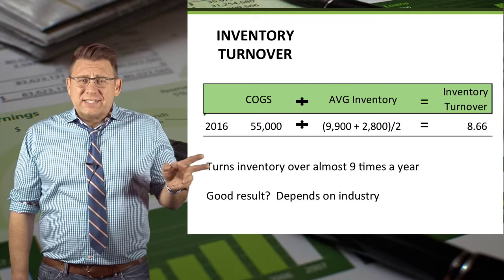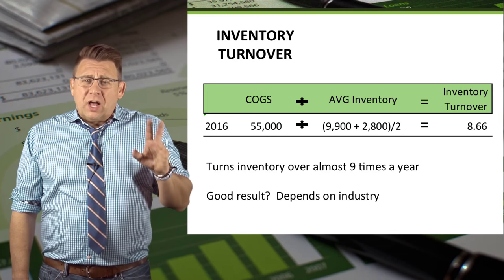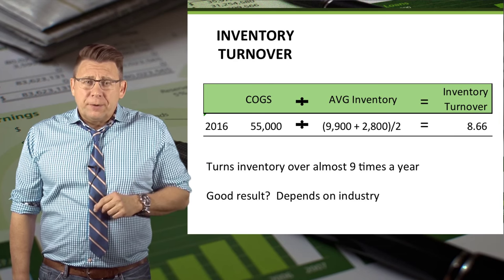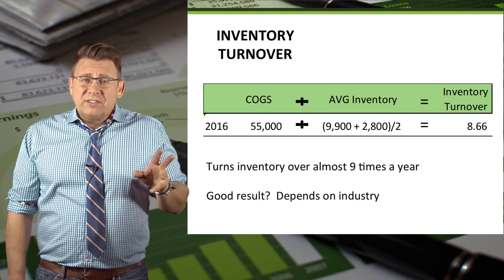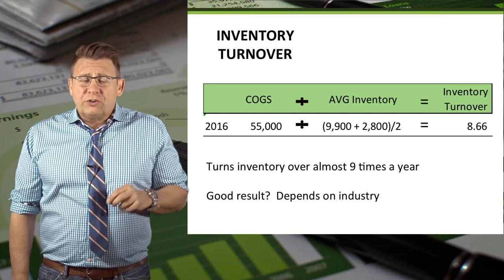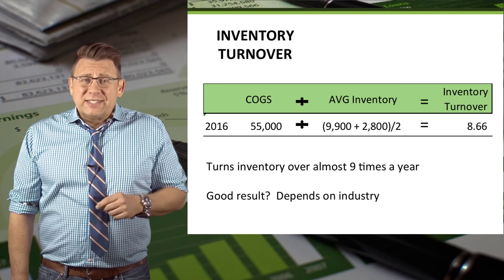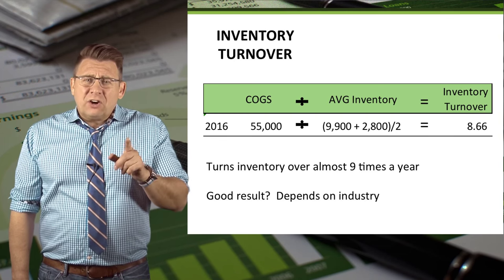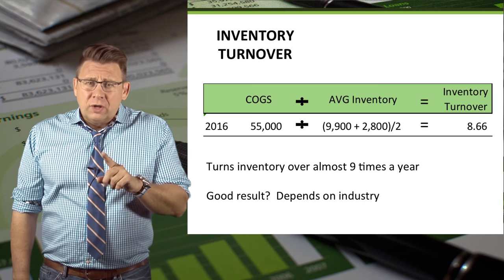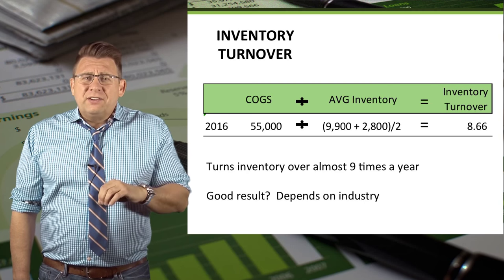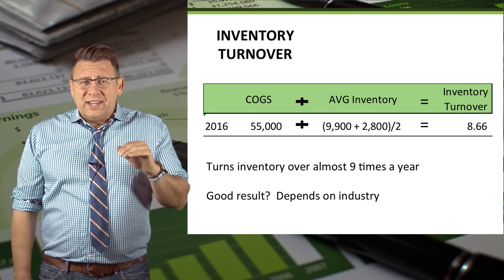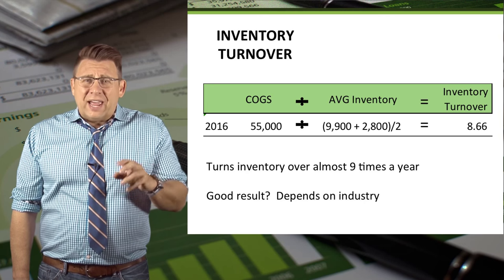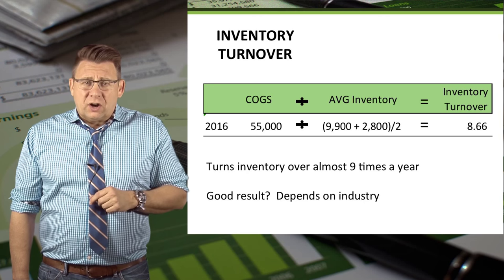For 2016, cost of goods sold is divided by the average inventory, which gives us inventory turnover of 8.66. It's hard to know if this is a strong ratio because we need to know what industry the company is in and what the industry averages are.